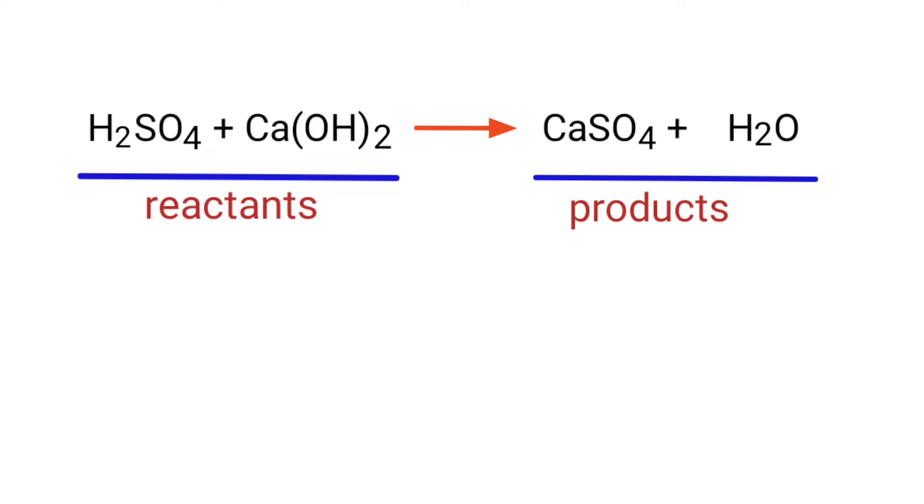In this equation the reactants are sulfuric acid and calcium hydroxide and the products are calcium sulphate and water.